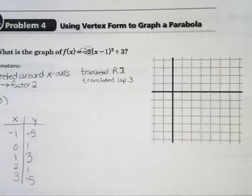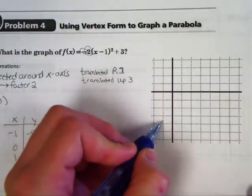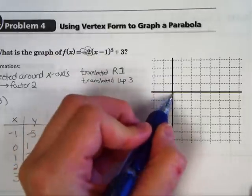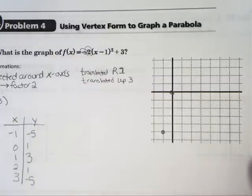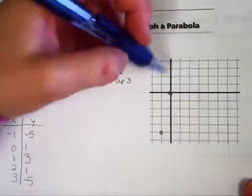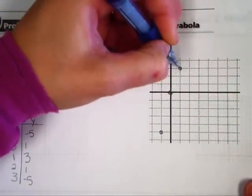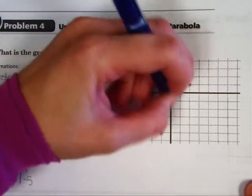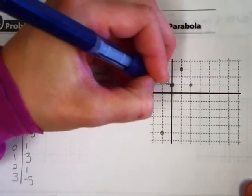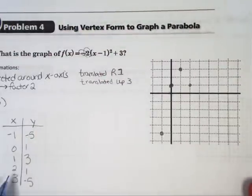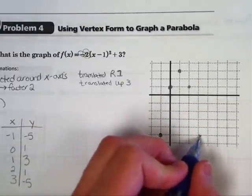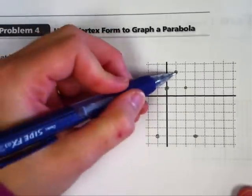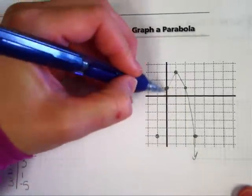Plot your points. -1, -5 is left 1 down 5. 0, 1 is over 0 up 1. 1, 3 is right 1 up 3. 2, 1 is right 2 up 1. 3, -5 is right 3 down 5. Make sure your points look like they make a perfect upside down U, which they do, and you have your graph.